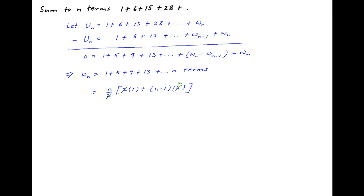This simplifies to n times in brackets 1 plus 2n minus 2 which is equal to n times in brackets 2n minus 1 which is equal to 2n square minus n.